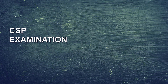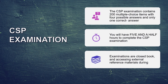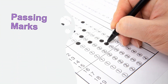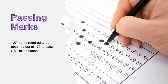Let's talk about the CSP examination. The CSP examination contains 200 multiple choice items with four answer options and only one correct answer. You will have five and a half hours to complete the examination. The examination is closed book with no access to external reference material. To pass, you need to obtain 107 marks out of 175. Previously it was 105, but it has now been increased to 107 out of 175.